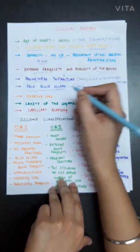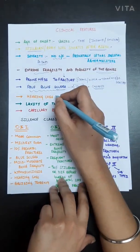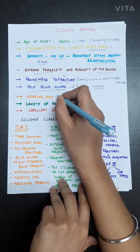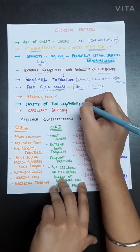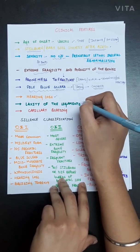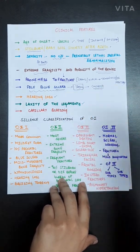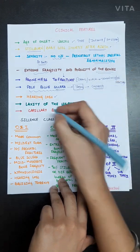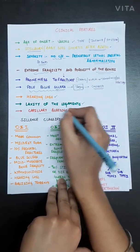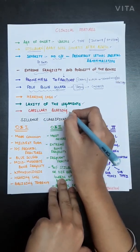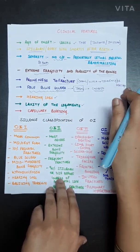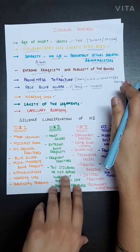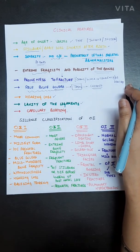Additional clinical features include hearing loss, laxity of the ligaments, hypermobility of the joints, and capillary bleeding. These features can also be seen in osteogenesis imperfecta.